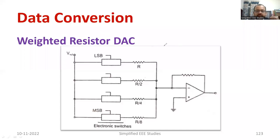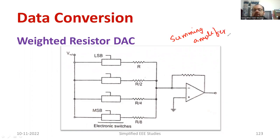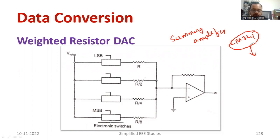Let us continue with the weighted resistor DAC. To discuss it, I need to speak about a summing amplifier. You can use an op-amp IC such as LM741 as a summing amplifier. The input will be the digital information, starting from the least significant bit and ending at the most significant bit. These inputs are connected with electronic switches.